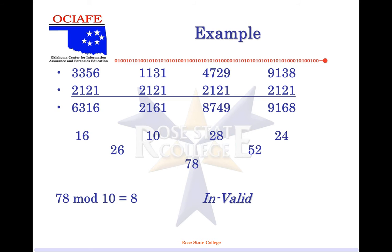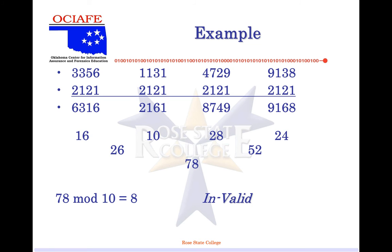The CVV is a security code — it means you can prove that you physically have the card in your hand. Otherwise you could calculate all possible credit card numbers and just buy things. Normal credit cards — the merchant is charged anywhere from 1 to 7% per swipe. A typical one right now is 1.74%, and if you have to key it in it's 2.74%. Some will say 1.74% plus 25 cents per swipe.